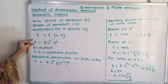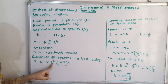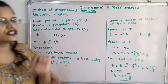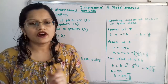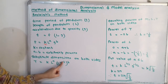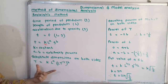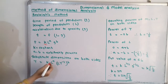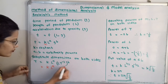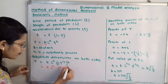For the time period we write T equal to K into — now for length L we keep it as L raise to A. The fundamental dimension for acceleration due to gravity is L into T raise to minus 2. We keep this in brackets and write raise to B. Simplifying: T = K into L raise to A into L raise to B into T raise to minus 2B.